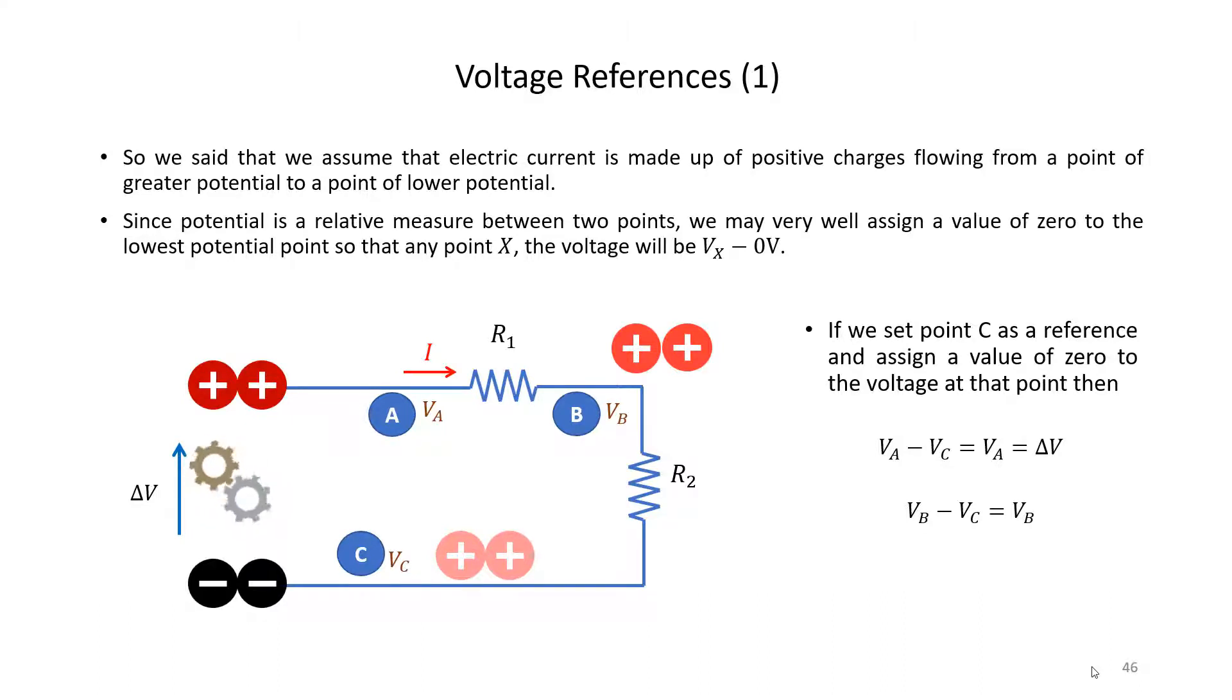One possibility is to pick a reference point for all the voltages in the circuit which is the point of lowest voltage. In this case it would be point C, the negative terminal of the battery. We can say that's going to be the reference point with respect to which we measure all the voltages. We can assign a value of 0 volts to this particular voltage level and this will make things a lot easier for us.